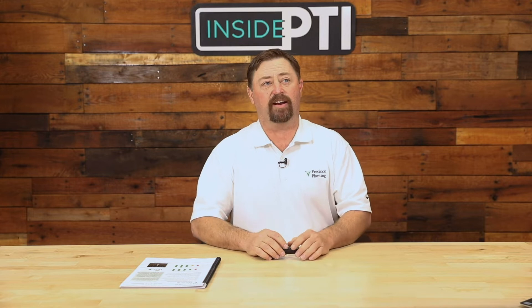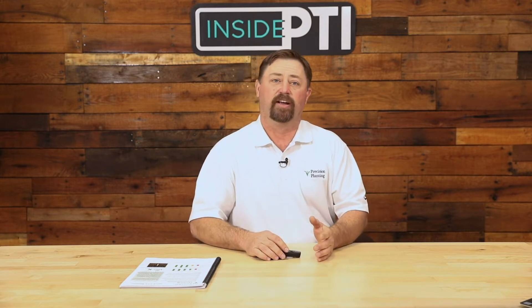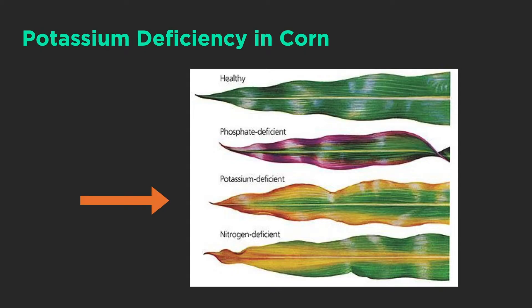If we look at potassium deficiency in the field, here are some corn leaves — I use this as a slide when I'm scouting fields. Potassium deficiency is going to show up as discoloration on the outside edges of the leaf. This is the symptomology of when you have run out of potassium out in the field.